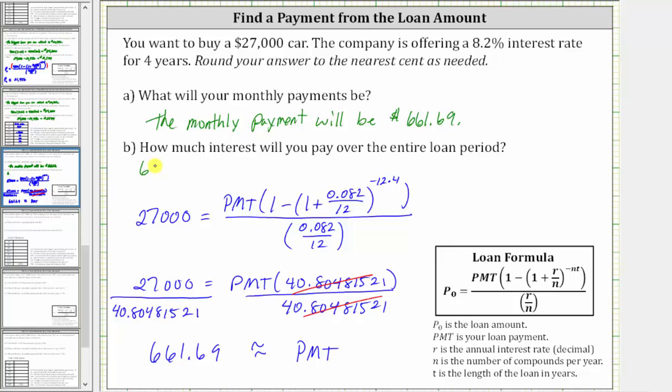So let's go ahead and set this up. We have the monthly payment of $661.69 times the number of payments, which is the number of months in four years, which is four times 12, or 48, and then minus the loan amount of $27,000.